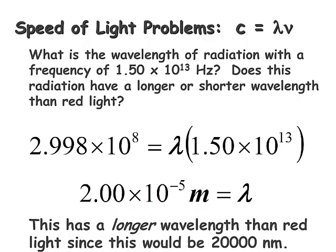Now, the spectrum showed red light at 700 nanometers, so we need to convert 2.00 × 10⁻⁵ meters into nanometers to compare. A nanometer is 10⁻⁹ of a meter, so changing the exponent to the negative ninth, we move the decimal over four places, giving us 20,000 nanometers — definitely a longer wavelength than red light.